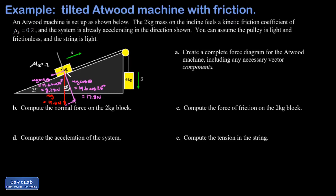A string is attached to the two kilogram block with unknown tension T. There's also a normal force pushing perpendicular up from the ramp. Because the block has no acceleration perpendicular to the ramp, the normal force equals the perpendicular component of gravity: 17.8 newtons. Finally, since the block slides up the ramp, it experiences a kinetic friction force fk opposing motion, where fk = mu_k times the normal force.